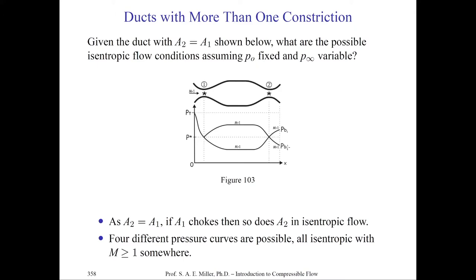Having supersonic flow with choked entrance and exit of the duct is a non-unique solution — there are two solutions and they depend on the particular back pressures for isentropic flow. This is unlike the nozzle problem. In summary, if A2 equals A1, both A1 and A2 choke in isentropic flow. There are four different pressure curves for Mach 1 flow somewhere in the flow because of course there are two nodes. If we never choke the flow, there are an infinite number of subsonic solutions.